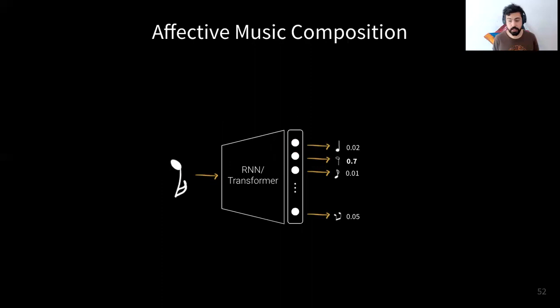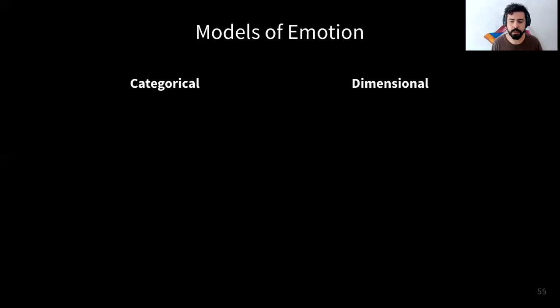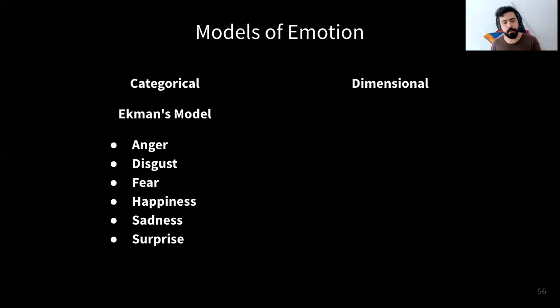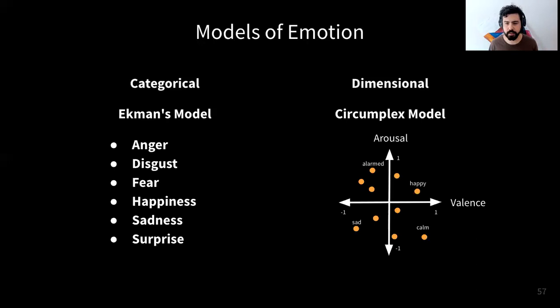With that background, we can now discuss how to control emotions in music generated by these networks. The first thing to consider is how to encode emotions in these models. In the literature there are mainly two models of emotion: categorical models and dimensional models. As an example of a categorical model, Ekman's model divides the space of emotion into six basic emotions. As an example of a dimensional model, the circumplex model divides the space into two axes — valence and arousal.